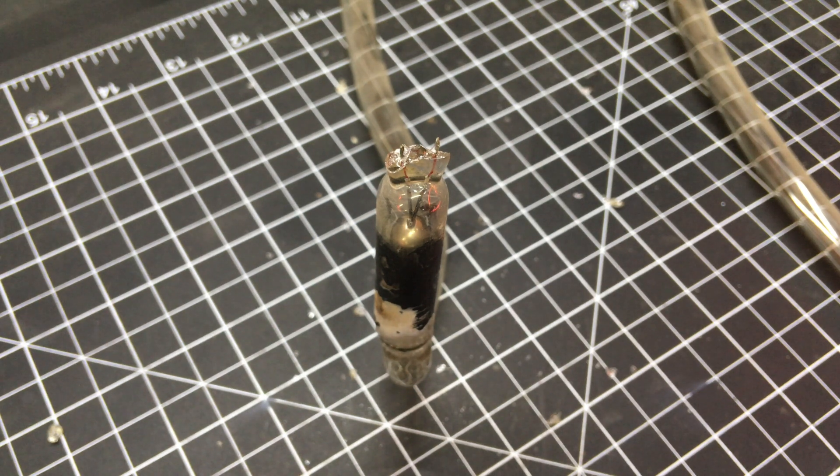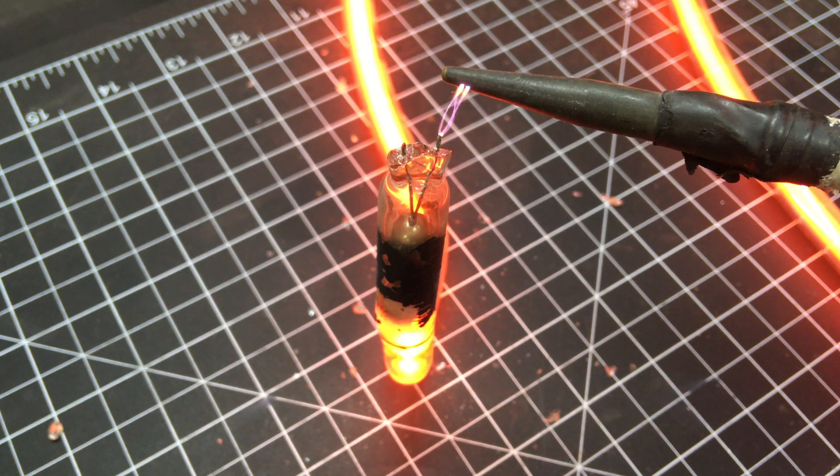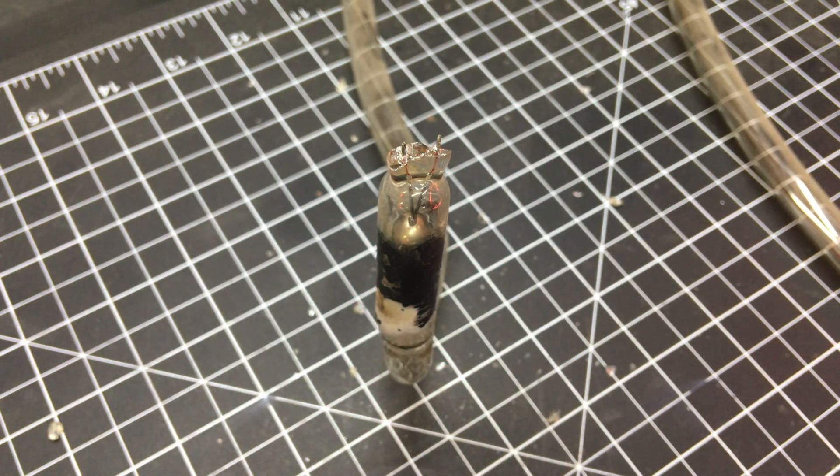At this point, it is a good idea to check the integrity of the tube to make sure chipping the glass didn't create a leak. Our tube is still holding a vacuum, so we can proceed with soldering.